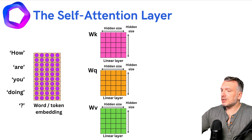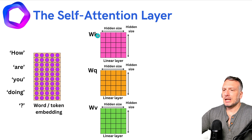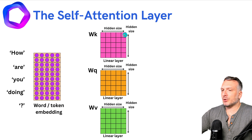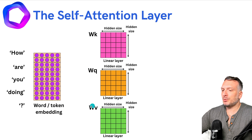Typically, the size of the vectors in the token embedding is called the hidden size or D model. I'm going to refer to this dimension as hidden size. So we have a vector embedding of size hidden size, and we have hidden size number of input features. Those linear layers are going to generate vectors of size hidden size. We have three different linear layers: WK, WQ, and WV.